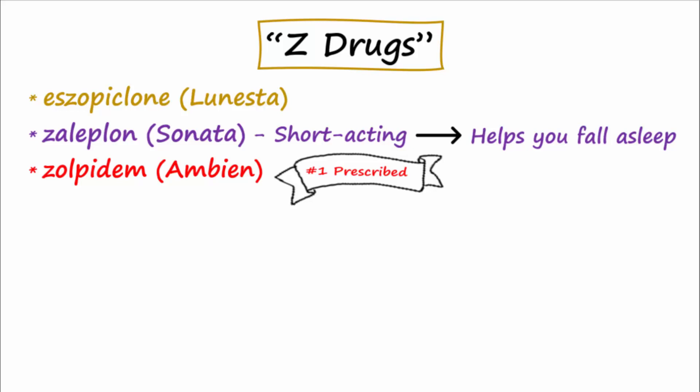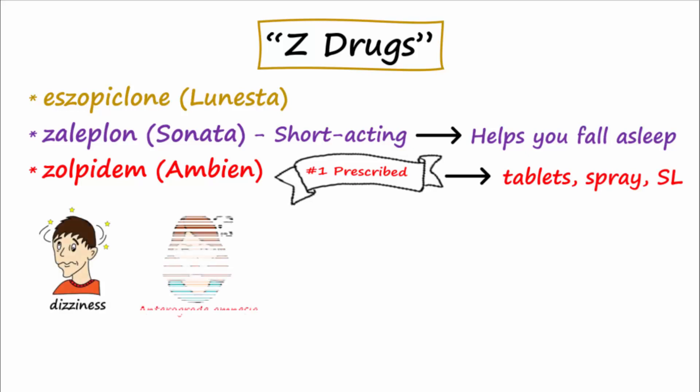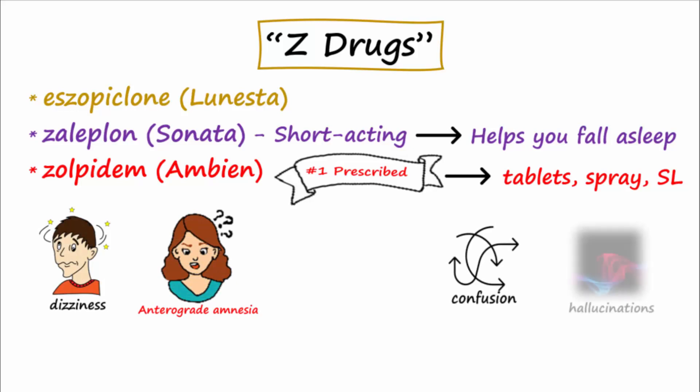Zolpidem is the most widely prescribed hypnotic and comes in many dosage forms, including oral tablets, extended-release oral tablets, oral spray, and sublingual forms. Side effects for the Z-drugs include dizziness, anterograde amnesia — which is impaired ability to form new memories — confusion, hallucinations, and possibly somnambulism, or sleepwalking.